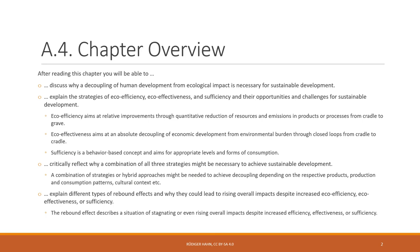After reading this chapter you will be able to do a couple of things. First, you will be able to discuss why a decoupling of human development on the one hand and ecological impact of humanity on the other is necessary to achieve sustainable development — because sustainable development is more than just ecological issues, it's also social issues. We will explain different strategies of sustainability: efficiency, eco-effectiveness, and sufficiency, and we will look at the different opportunities and challenges of these strategies for sustainable development.